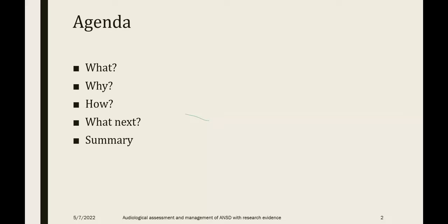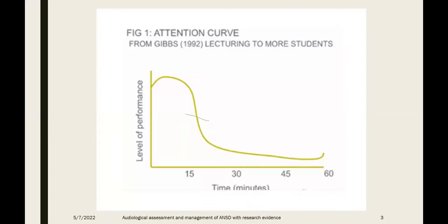There is research evidence showing that a student's level of performance drops drastically after 15 to 20 minutes, and after 30 minutes it goes blank. So what we'll do is speak for 20 to 25 minutes, then take a short break where you recoup and reflect on what you've learned, then come back for the next 20 to 25 minutes. We'll keep the remaining 15 to 20 minutes for discussion. ANSD is a condition where people listen but cannot understand — a very difficult condition to handle.